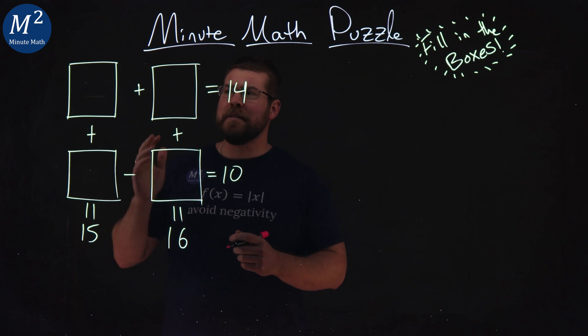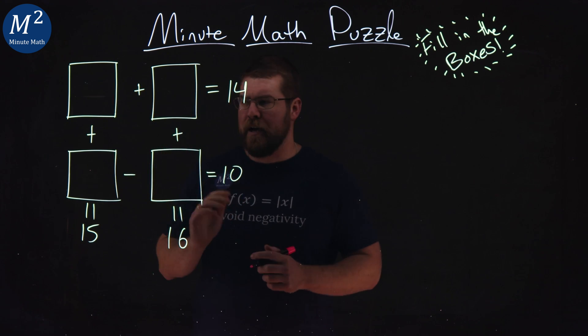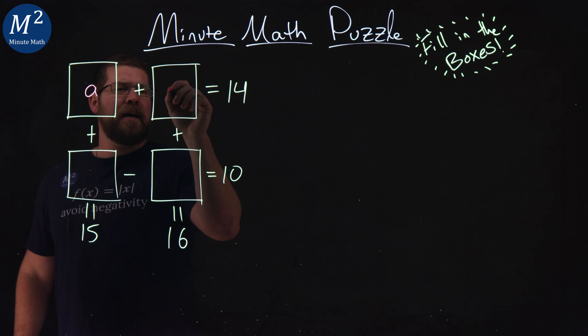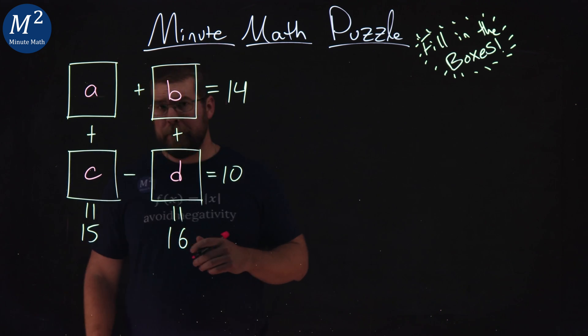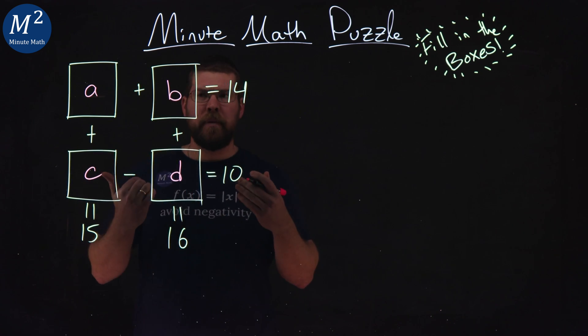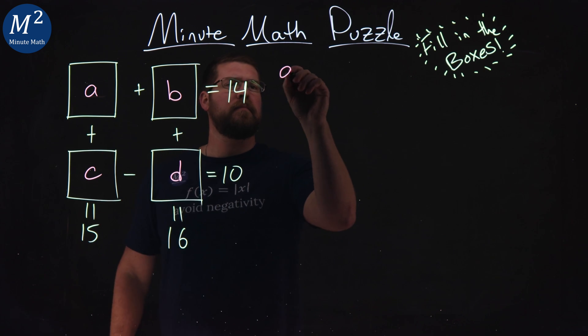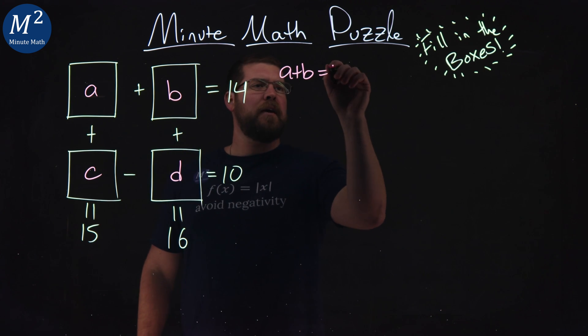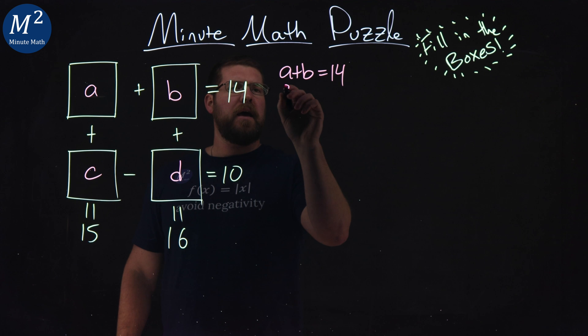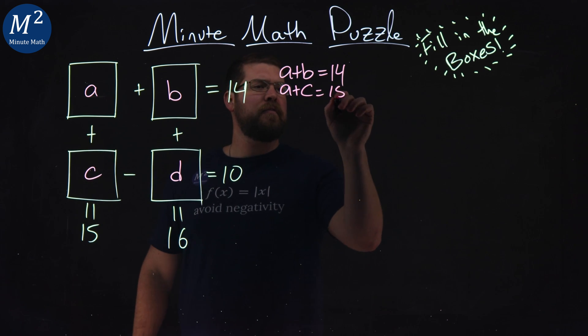Alright, first step I want to do is label these boxes. I'm going to call it box A, B, C, and D. What do we know about these boxes? Well, A plus B is equal to 14.